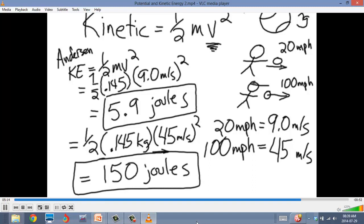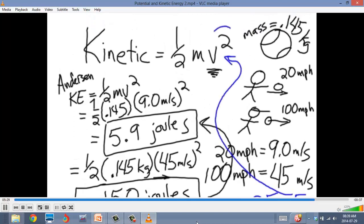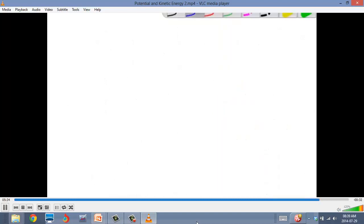Again, when I pitched at 20 miles an hour, it was only 5.9 joules. And so even though that pitcher is throwing it five times as fast, he's getting roughly 25 times the amount of energy out of that pitch. And that's why, if you look at the equation, the velocity being squared is super important to understand that.